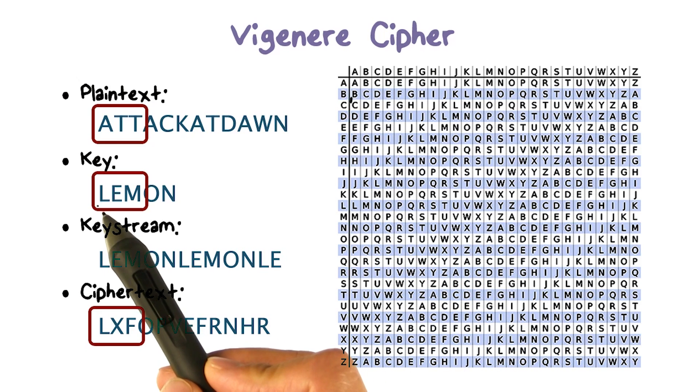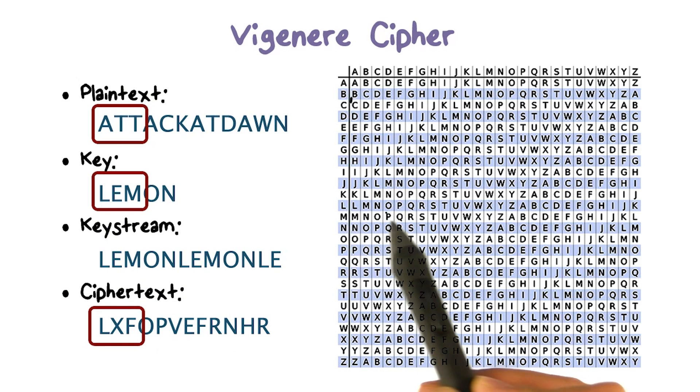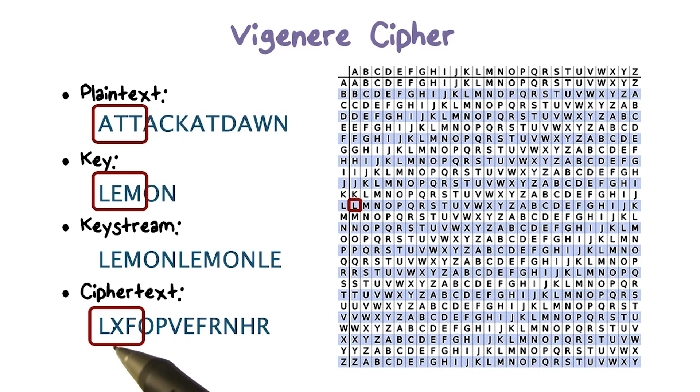We use the letter in the key, L, to look at the row to decide the mapping of A. Here, the mapping says L, which means in the ciphertext, A has been mapped to L.